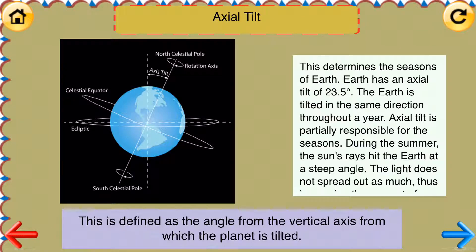Axial Tilt is defined as the angle from the vertical axis from which the planet is tilted. This determines the seasons of Earth. Earth has an axial tilt of 23.5 degrees. The Earth is tilted in the same direction throughout a year. Axial tilt is partially responsible for the seasons. During the summer, the sun's rays hit the Earth at a steep angle.